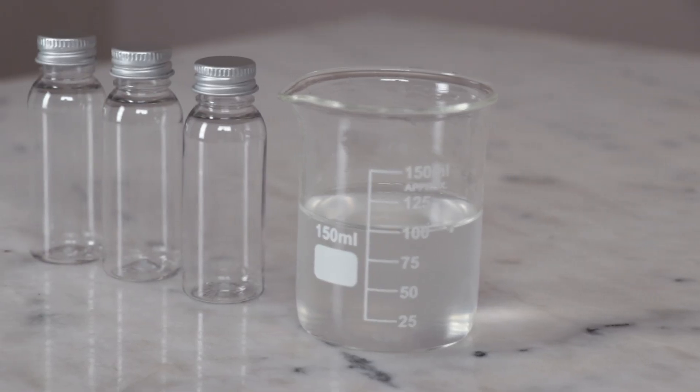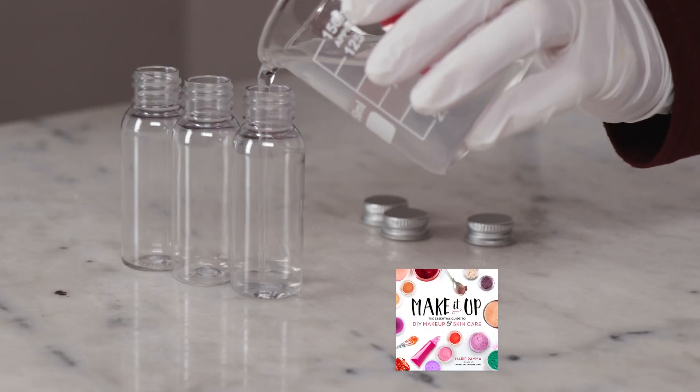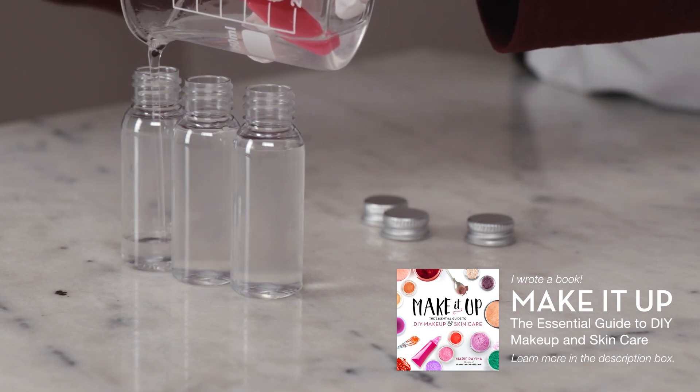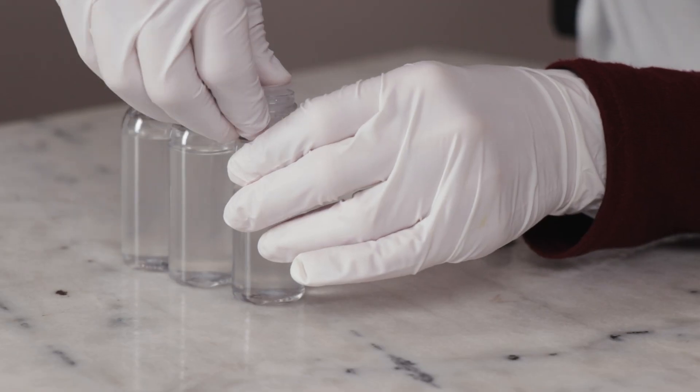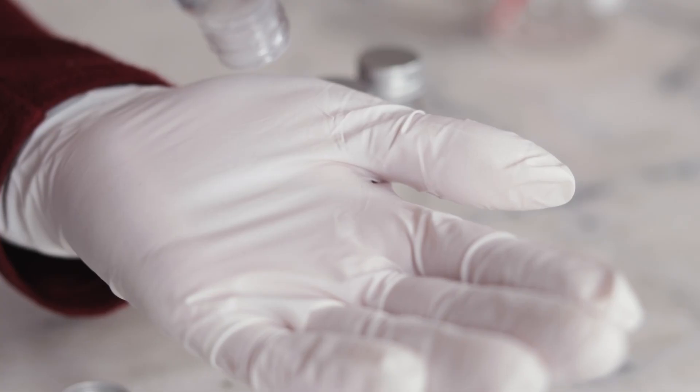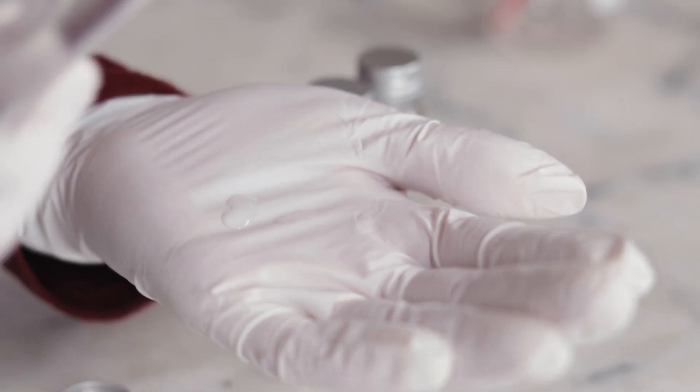Once the pH is where it needs to be, we can package it up. I'm using some 30ml or 1 fluid ounce bottles fitted with orifice reducers that I purchased from Voyager Soap and Candle. The thickeners in this serum make the serum just viscous enough that you can shake out a drop or two at a time from the orifice reducer. Other good packaging options would be a bottle with a treatment pump top or with a dropper cap.